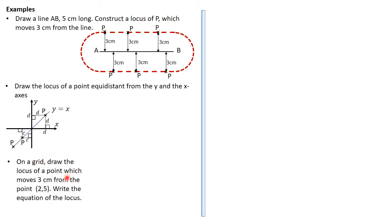Another question: on a grid, draw the locus of a point which moves three centimeters from point (2, 5), and write the equation of the locus. Students should know how to write the equation of a circle. They should also identify that this is drawing a circle whose center is (2, 5) and whose radius is three.